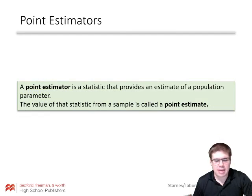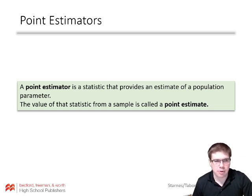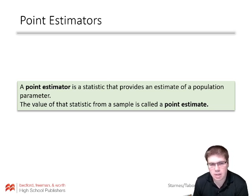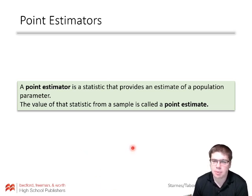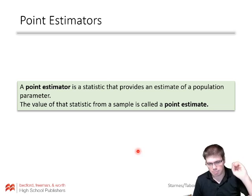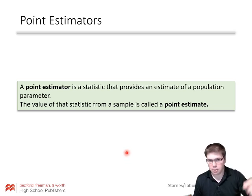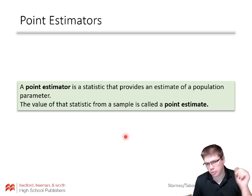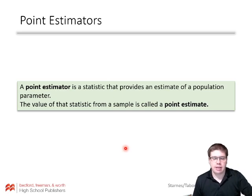We're going to start with point estimators. A point estimator is a statistic that provides an estimate of a population parameter. The value of that statistic from a sample is called a point estimate. Our most common point estimates are x-bar — when you get a single sample mean from a population, that x-bar is your point estimate for the population parameter mu. And p-hat is the other one, a sample proportion estimating the population parameter p, the actual population proportion.